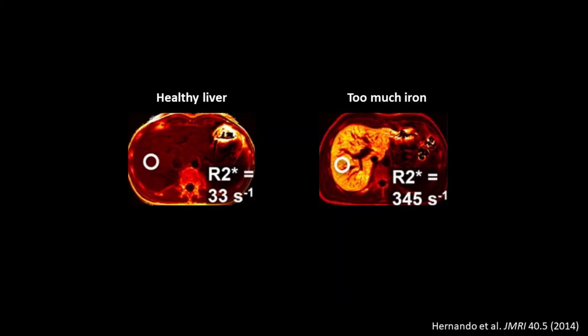In the liver, pixels that change faster contain more iron, so R2 star mapping is a great technique to diagnose and monitor patients who have an unhealthy amount of iron in their liver.